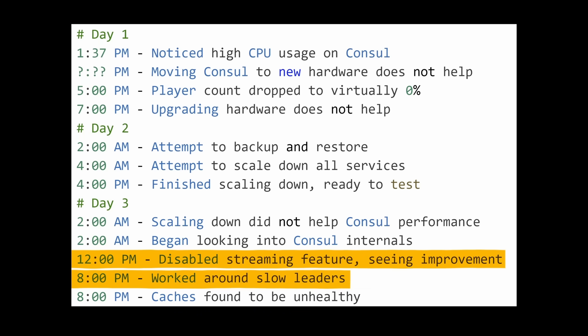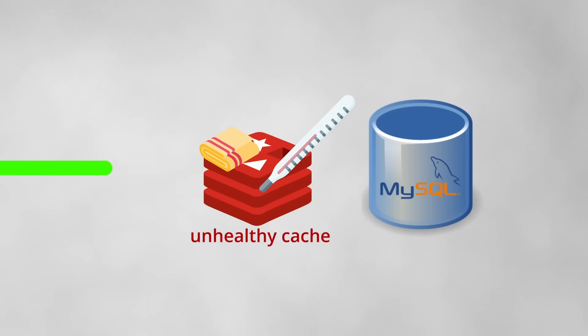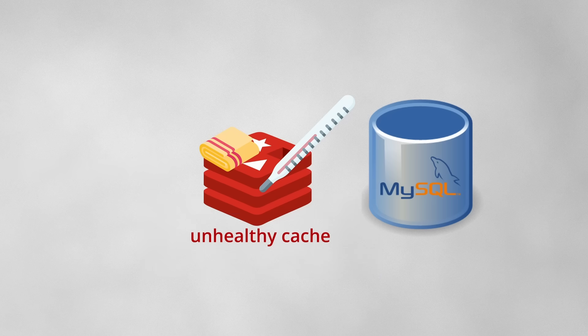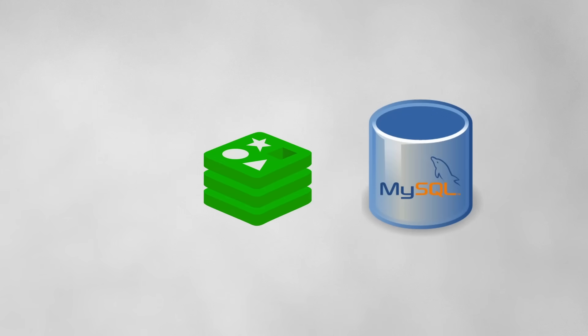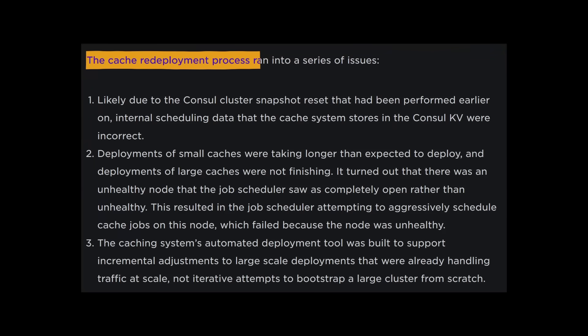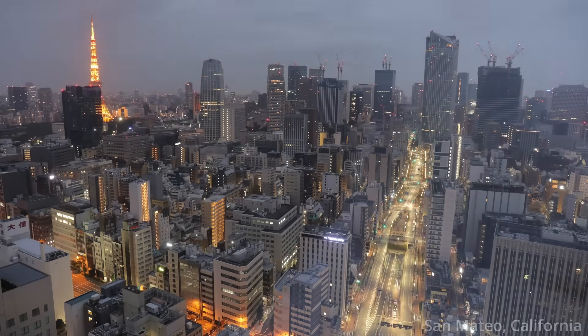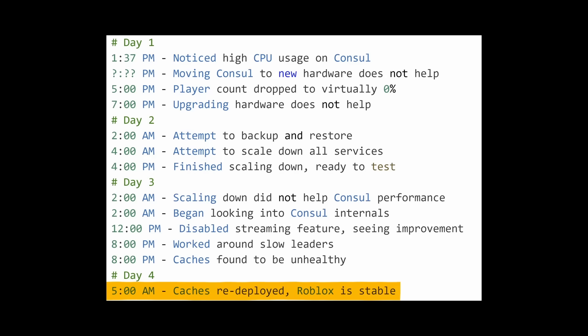The engineers only had one more problem: all of their caches were in an unhealthy state, perhaps somehow made inconsistent or corrupt by the prior chaos. They could simply redeploy it, which would reset and flush everything for a clean slate. Unfortunately, the redeployment process ran into a series of three issues which required manual intervention. Working through the night, they eventually finished redeploying the cache by 5am the next morning — 61 hours since the start of the outage — and were ready to bring Roblox back.